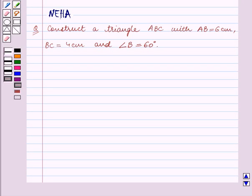Hello and welcome to the session. In this session we will discuss the following question. Construct a triangle ABC with AB equal to 6 cm, BC equal to 4 cm, and angle B equal to 60 degrees.